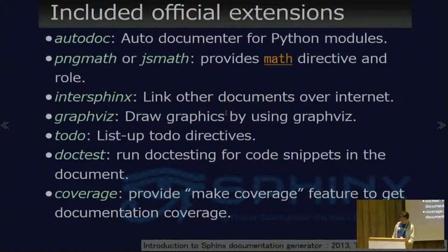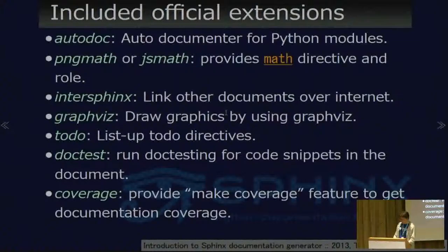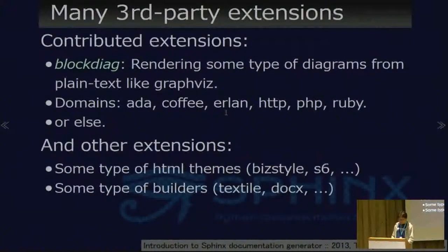Next, Sphinx extensions. Sphinx has many extensions — like Autodoc for Python modules, a math renderer, and InterSphinx to link other documents over the internet. GraphViz support, doctest, and coverage. Some elements I will demonstrate later. And many third-party extensions: BlockDiag for rendering diagrams from plaintext like GraphViz, and domain extensions for language signature rendering support. You can find extensions at PyPI.